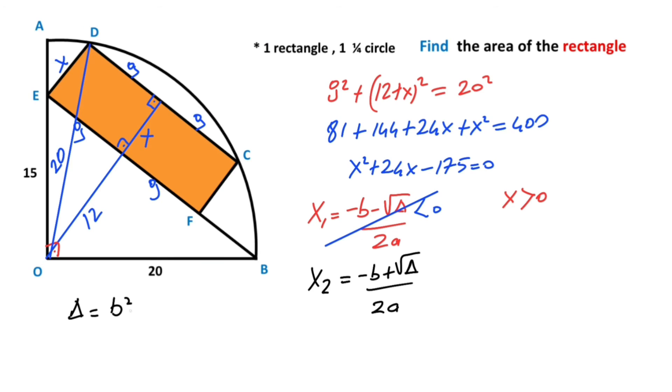Let's remind you: delta equals b squared minus 4 times a times c. So b is 24. 24 squared minus 4 times a is 1, and c is minus 175.